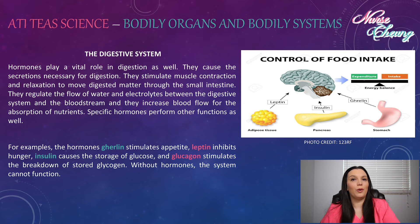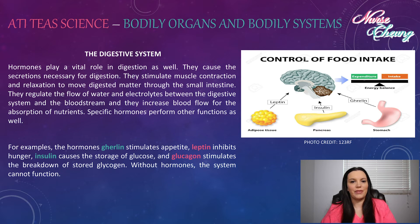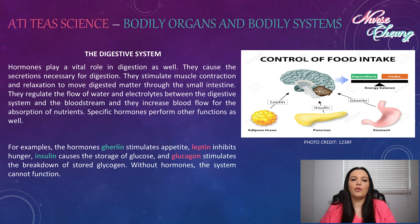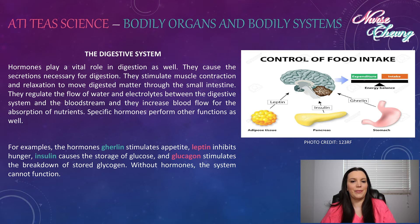Hormones play a vital role in digestion as well. They cause the secretions necessary for digestion, stimulate muscle contraction and relaxation to move digestive matter through the small intestine, regulate the flow of water and electrolytes between the digestive system and the bloodstream, and increase blood flow for the absorption of nutrients. Specific hormones perform other functions as well.